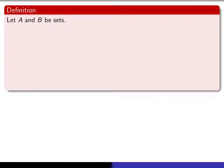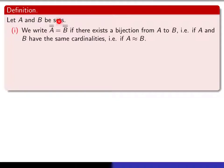So here are the relevant definitions. We give ourselves any two sets A and B. We're going to use this notation, provided there exists a bijection from A to B. In other words, provided A and B have the same cardinalities.